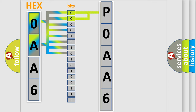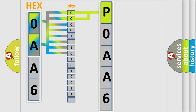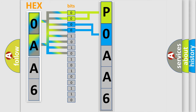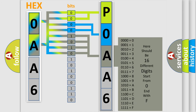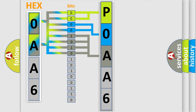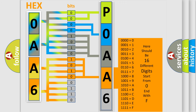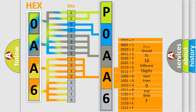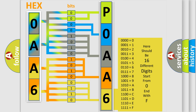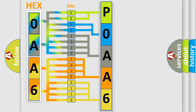By combining the first two bits, the basic character of the error code is expressed. The next two bits determine the second character. The last four bits of the first byte define the third character of the code. The second byte is composed of a combination of eight bits: the first four bits determine the fourth character, and the last four bits define the fifth character. A single byte conceals 256 possible combinations. We now know how the diagnostic tool translates the received information into a more comprehensible format.